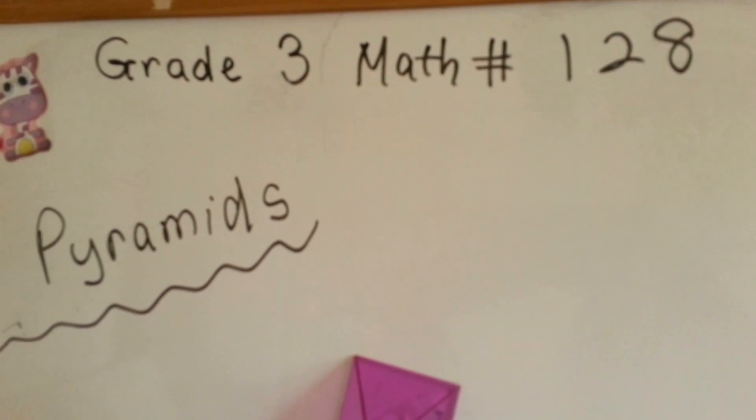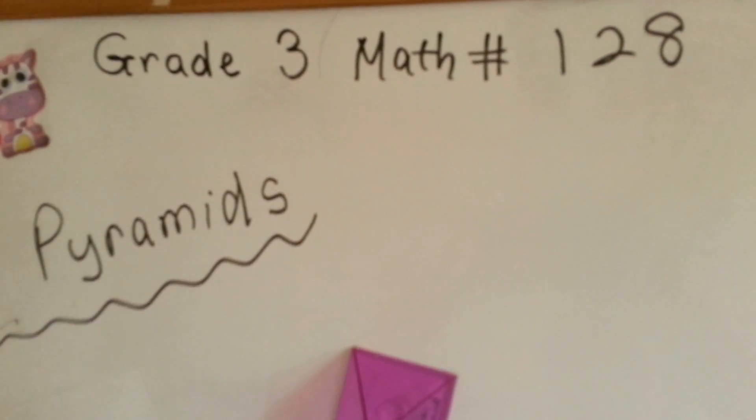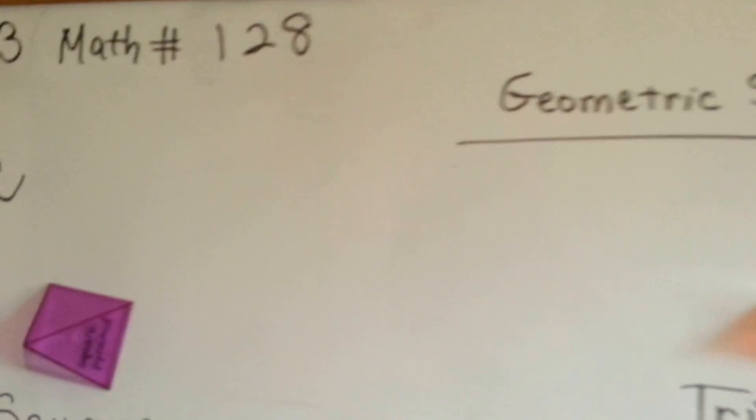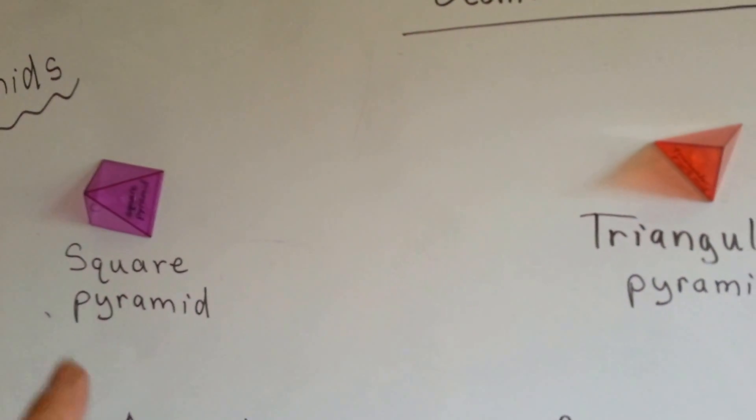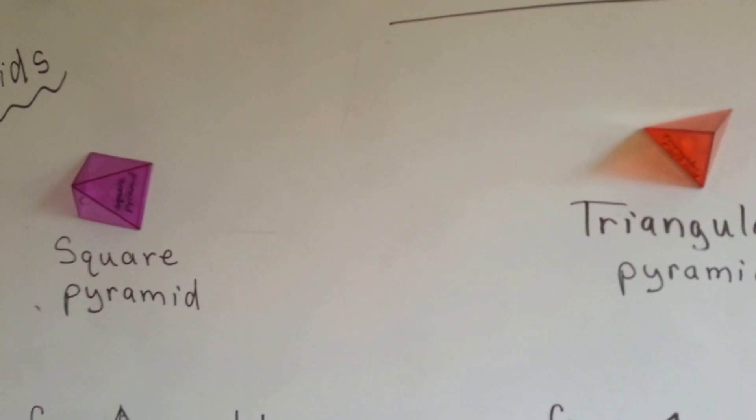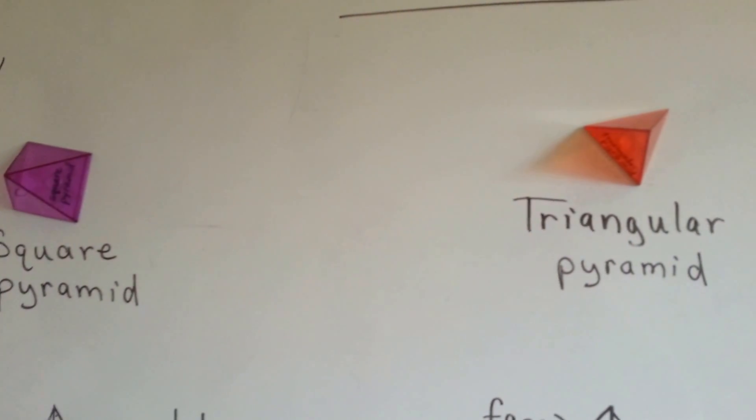Grade 3 math number 128, Pyramids. We've been going over some geometric shapes, and now I want to show you what pyramids look like. That's a square pyramid, and that's a triangular pyramid.